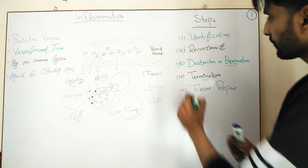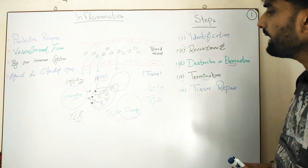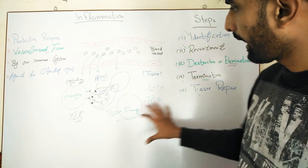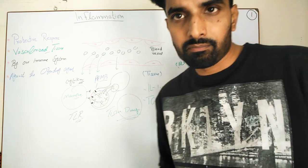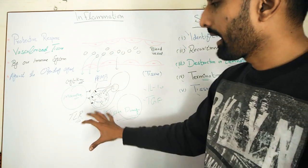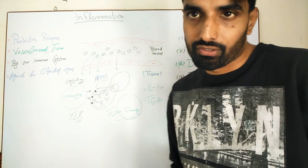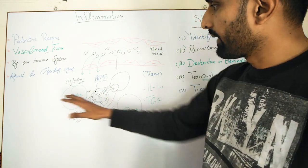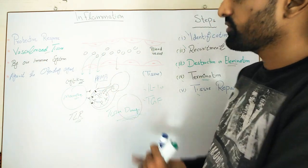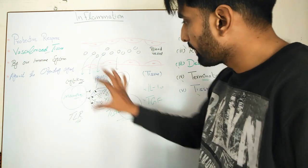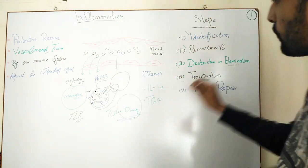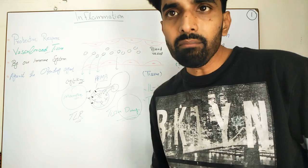The fifth and final step is tissue repair. In the process of countering the pathogen or foreign particle, some tissue damage has also been caused by our immune cells. While they were destroying the foreign particle, collateral tissue damage occurred. After termination of inflammation, tissue repair is carried out to restore the damaged area.